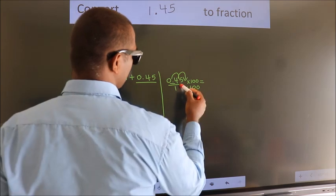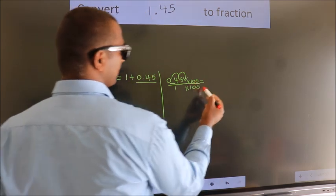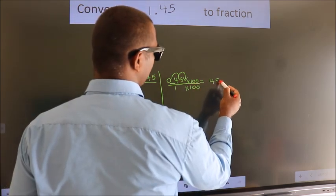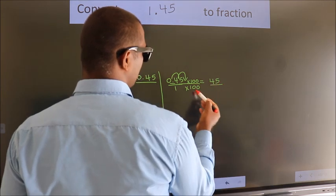Next, 0.45 times 100, we get 45. 1 times 100 is 100.